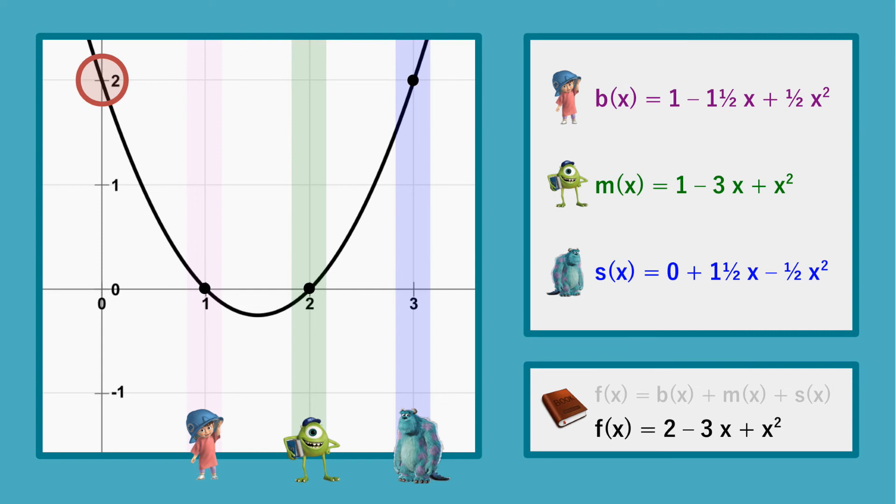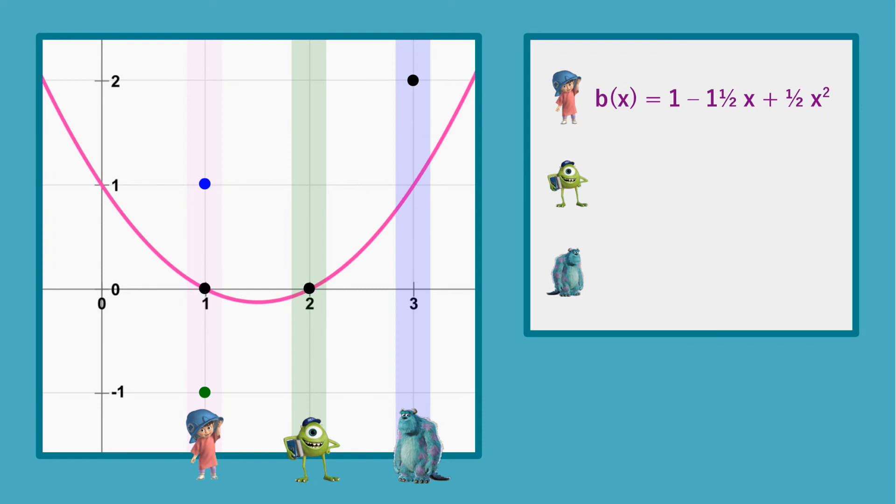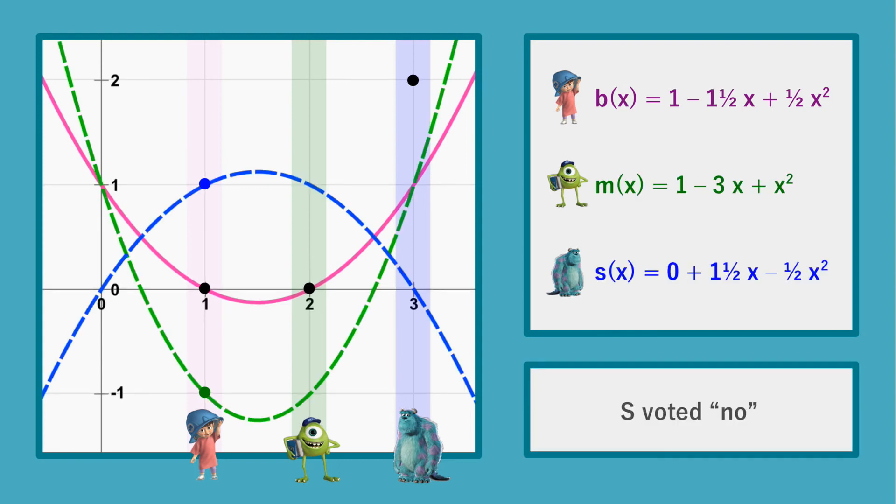Now, let's quickly verify that Boo indeed does not learn whether it was Mike or Sully who voted the value of 0. Here, we have all the information that Boo has at the end of the computation. She knows her own polynomial, the shares she receives from the other parties, and the 3 points of f. As we already saw in the actual run of the protocol, it could be the case that Mike votes yes and Sully voted no.